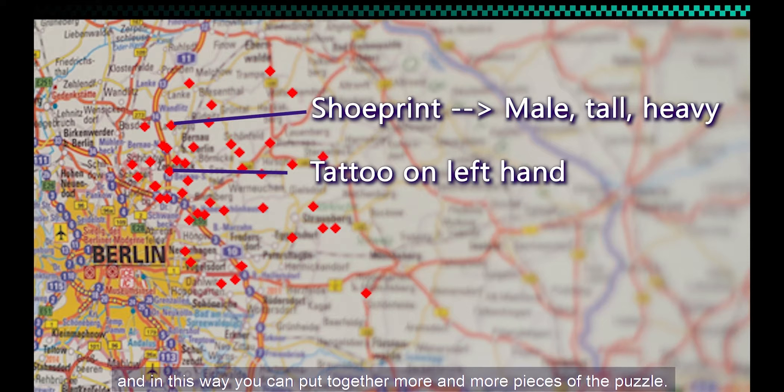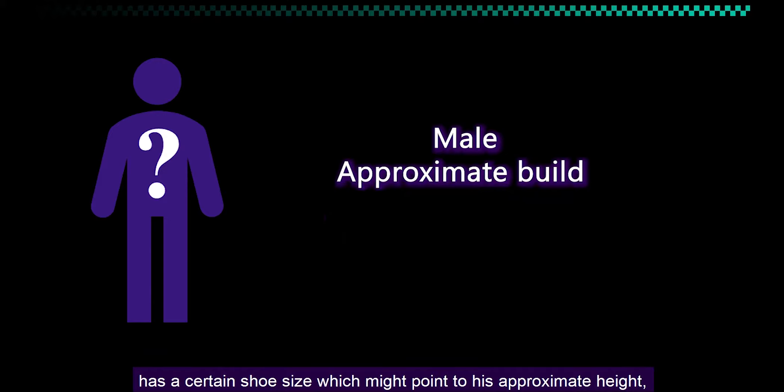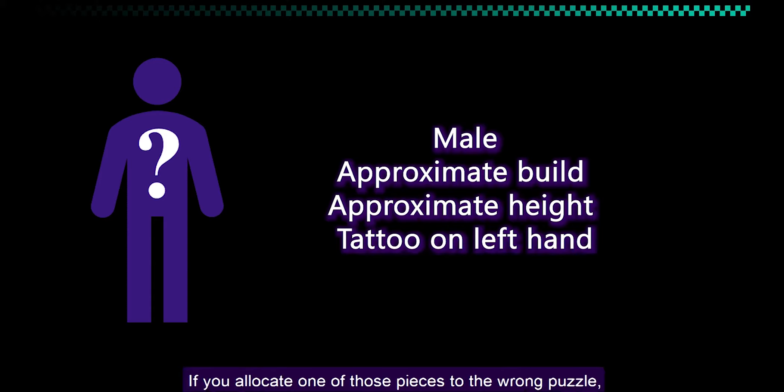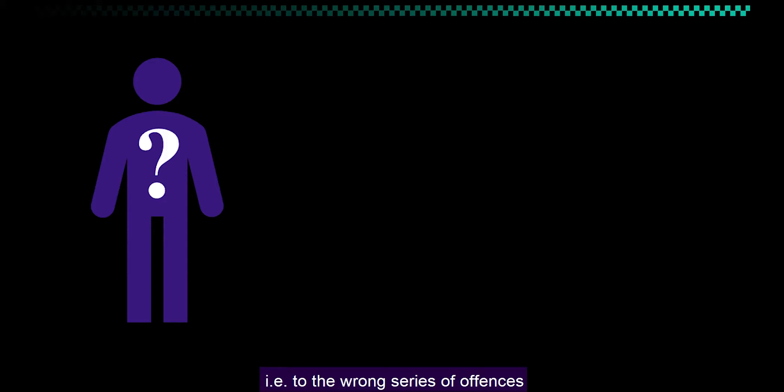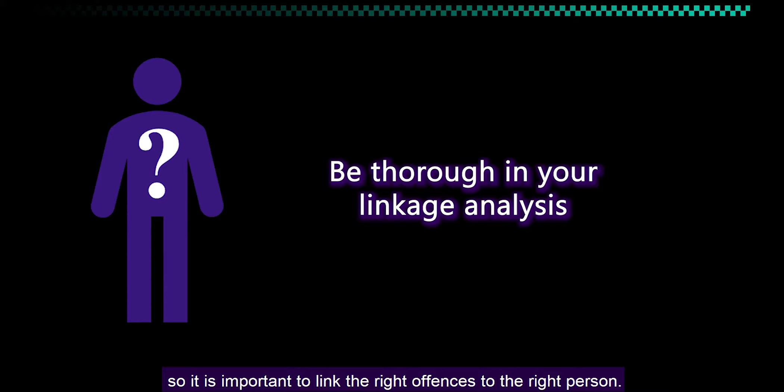You now have good reasons to believe that the offender responsible for this particular series is of a certain gender and weight, has a certain shoe size which might point to his approximate height, and he has a tattoo on one hand. If you allocate one of those pieces to the wrong puzzle — i.e. to the wrong series of offences — you unnecessarily hinder the investigation. So it is important to link the right offences to the right person.